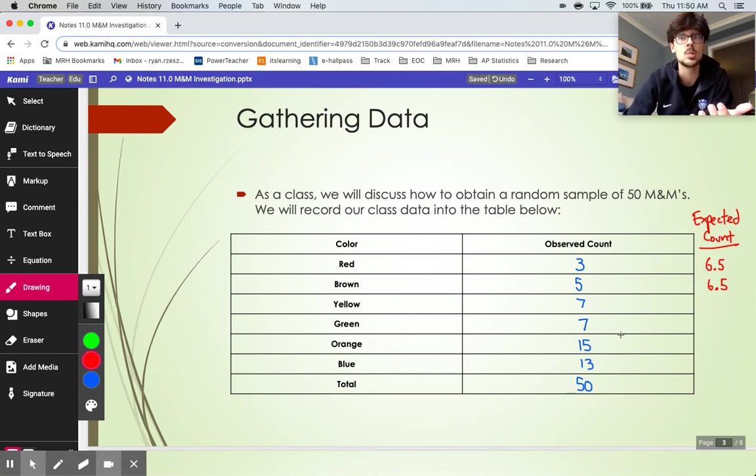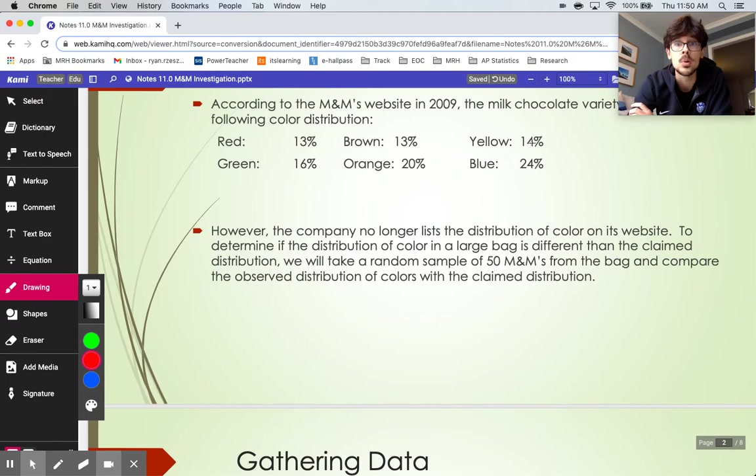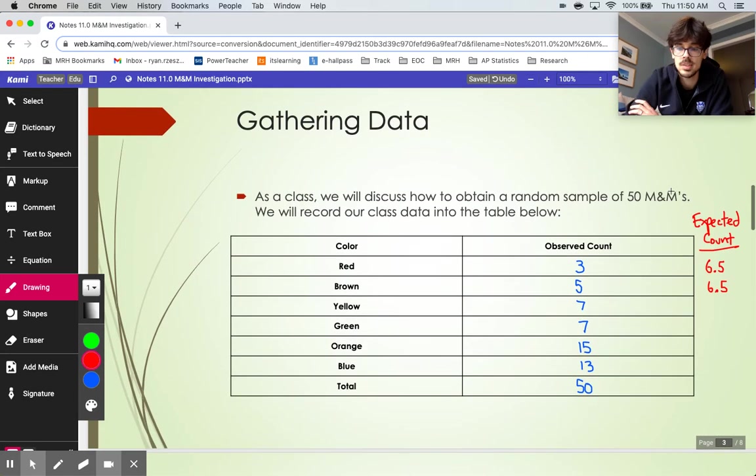And if we keep going on using that same sort of setup, there were supposed to be 14% yellow, 16% green. That turns out to be 7 yellow and 8 green that we were looking for. So actually, the yellow, we hit dead on. We got exactly what we were supposed to get. The green, we were 1 M&M too low.